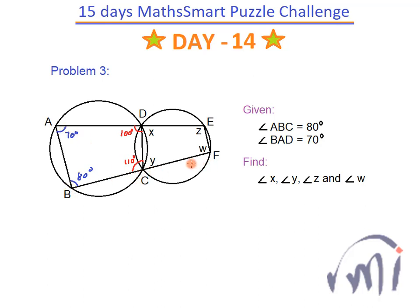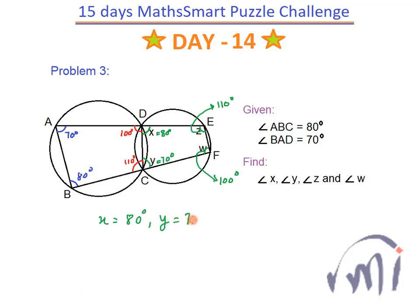BCF is a straight line, so if the interior angle is 110 degrees, the exterior angle Y will be equal to 180 minus 110, that is 70 degrees. And the angle adjacent to 100 degrees on the straight line gives 180 minus 100, that is 80 degrees. Angle Z is opposite to angle Y, so Z plus Y has to be 180 degrees, meaning Z equals 180 minus 70, that is 110 degrees. So X is 80 degrees, Y is 70 degrees, Z is 110 degrees, and W is 100 degrees.